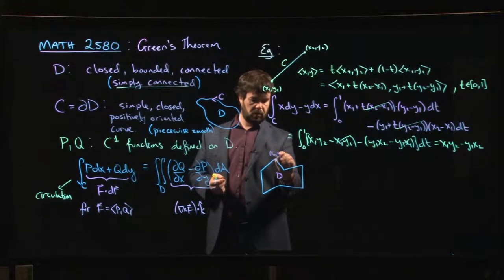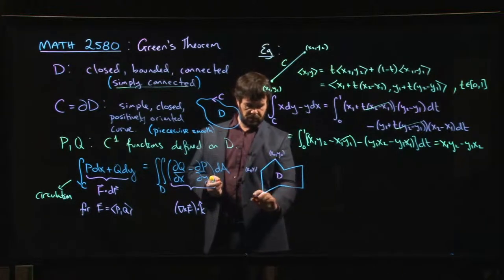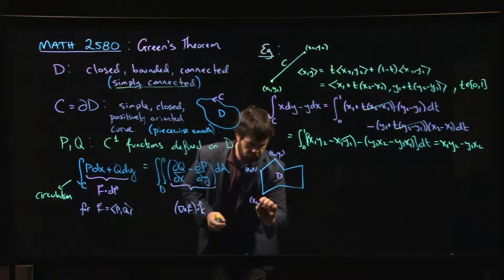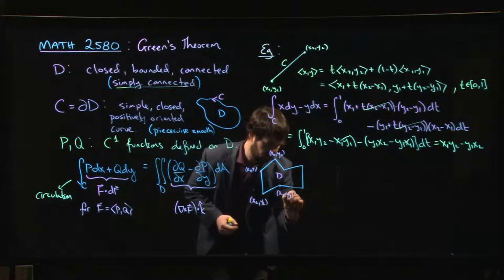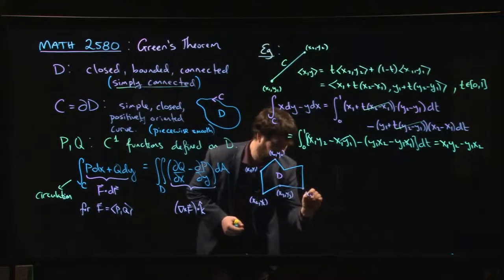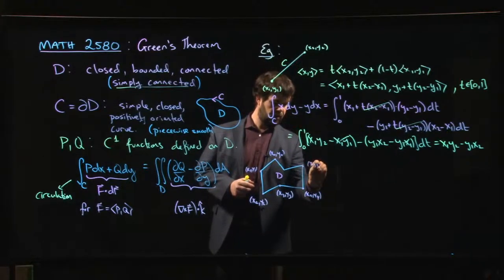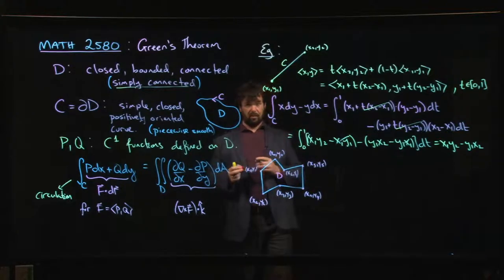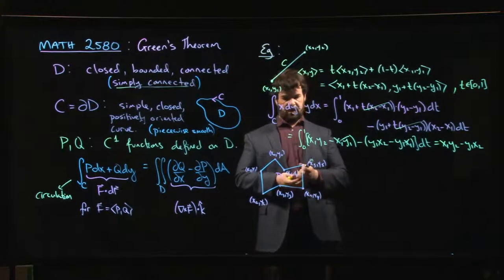With points, let's say x0 y0, x1 y1. So I'm just labeling the vertices. x2 y2, x3 y3, x4 y4, x5 y5, and finally x6 y6. So it's a hexagon. It's a very irregular hexagon, but it's a hexagon.